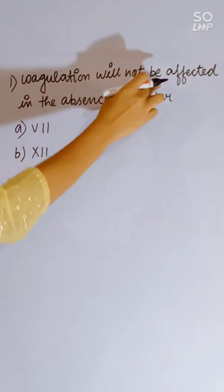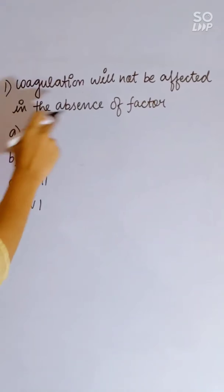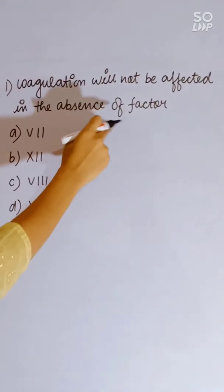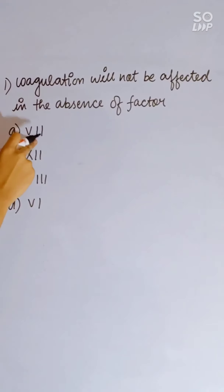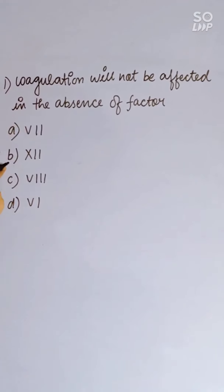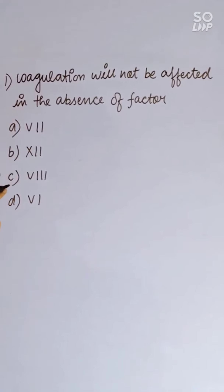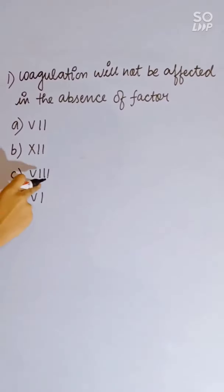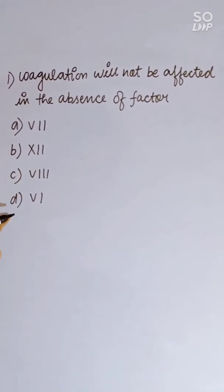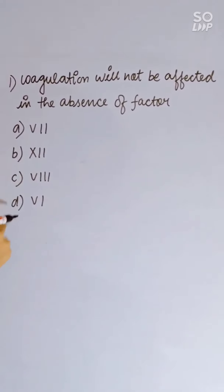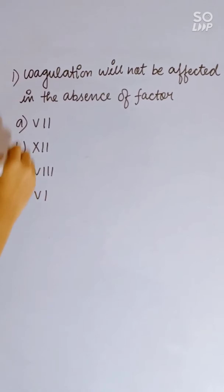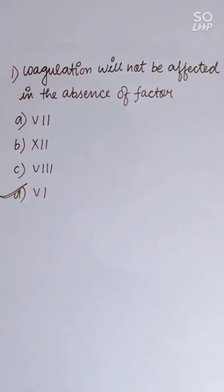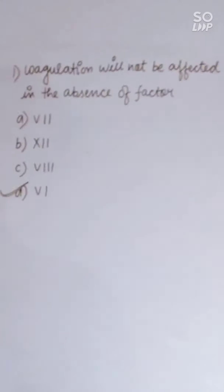Coagulation will not be affected in the absence of which factor? Options: 7, 12, 8, or 6. Factor 6 does not help in coagulation. Correct answer is 6.